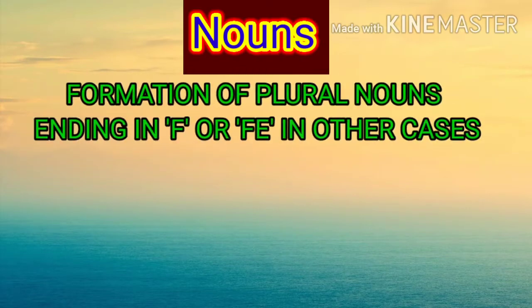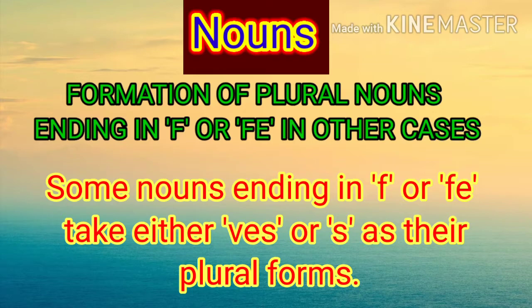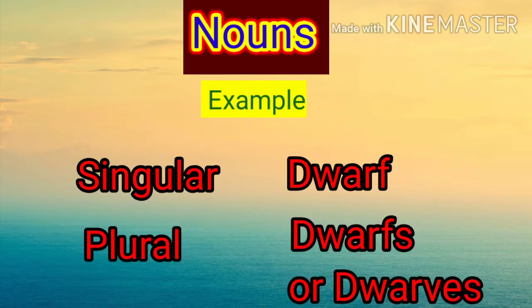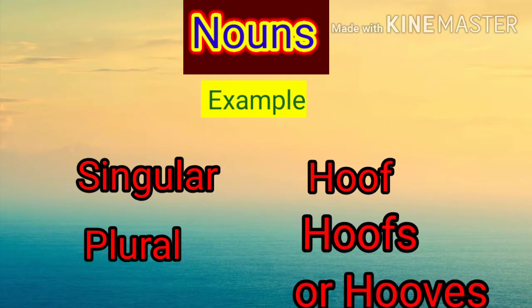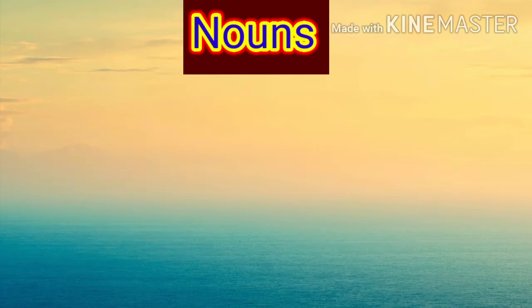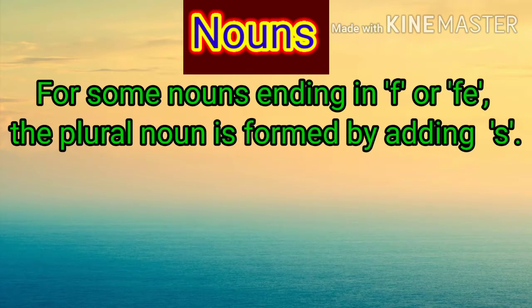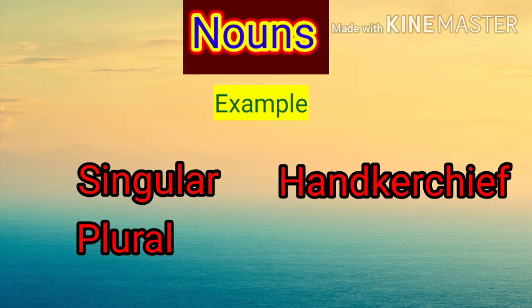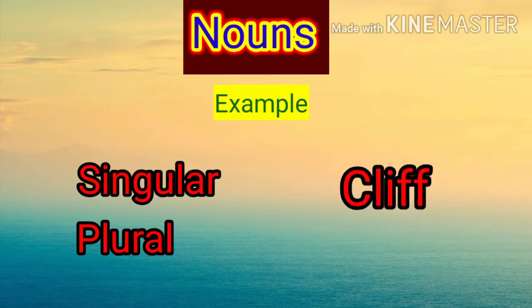Next heading: formation of plural nouns ending in -f or -fe in other cases. Some nouns ending in -f or -fe take either -ves or -s as their plural forms. For example: dwarf — dwarfs or dwarves; hoof — hoofs or hooves; scarf — scarfs or scarves. For some nouns ending in -f or -fe the plural is formed by just adding -s. For example: chief — chiefs; handkerchief — handkerchiefs; cliff — cliffs.